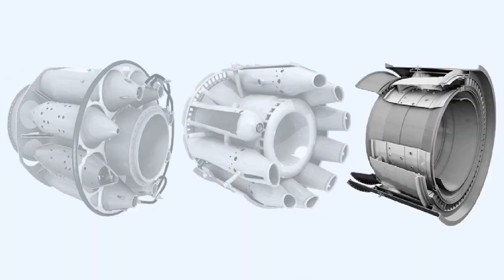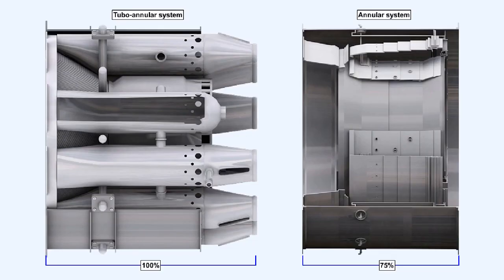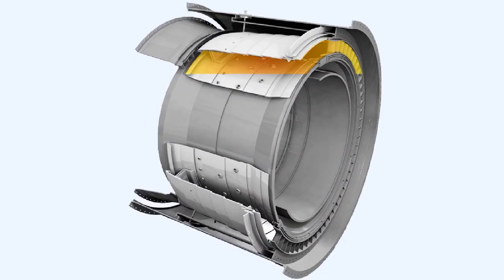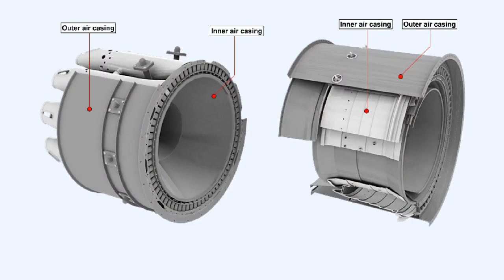The annular system has several advantages over the multiple combustion chamber system and the tubo-annular system from which it was developed. For the same power output, the length of the annular chamber is only 75% that of a tubo-annular system of the same diameter. There are no flame propagation problems. Compared to a tubo-annular system, the air casing area is less. Consequently, less cooling air is required.